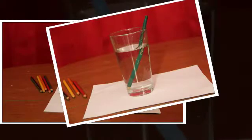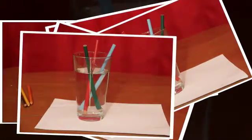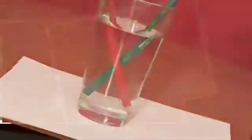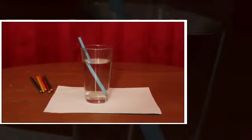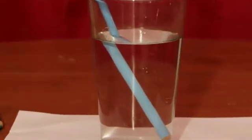When light travels it always travels in a straight line unless it comes in contact with another substance such as water. When light passes through water it will alter its direction.